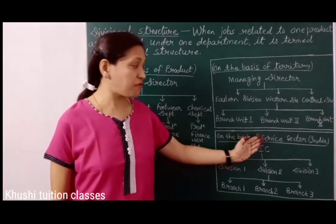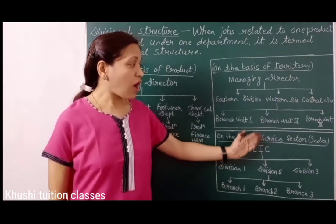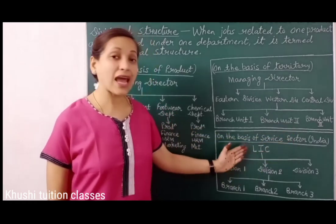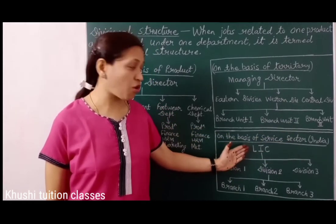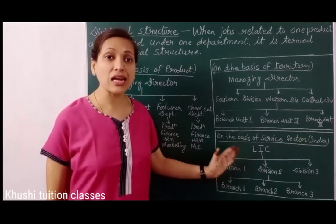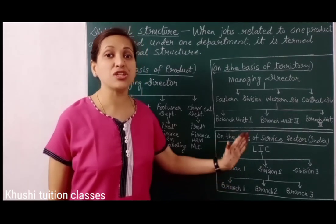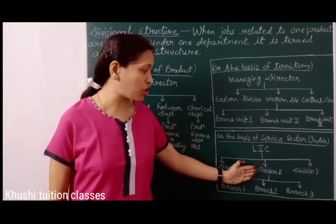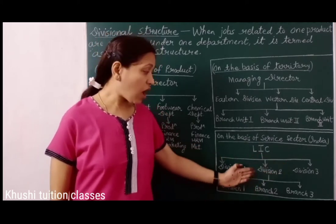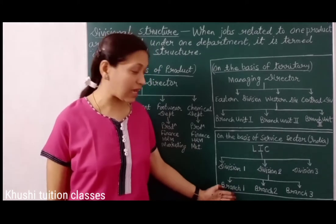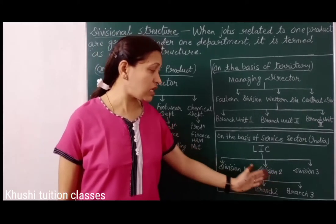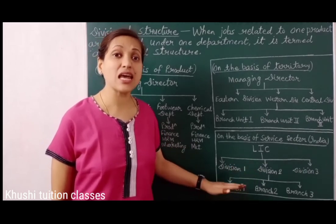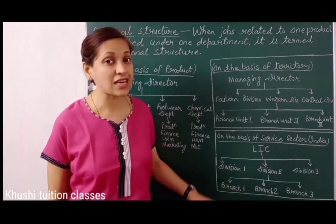The divisional structure on the basis of services — our services are provided in India. For example, LIC, Life Insurance Corporation of India. LIC ने अपने total Indian market को कुछ divisions में divide किया है, जैसे division 1, division 2, division 3. हर division में कुछ branches हैं, जैसे branch 1, branch 2, branch 3 under division 2. हर branch में insurance से related functions separately किये जाएंगे.